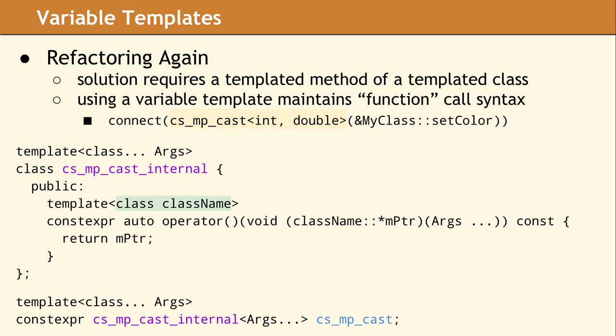In our current design, the work is now done by a templated method of a templated class. By moving the variadic template to the class, the argument types for setColor are still part of the parameter pack. The class name template was never passed in the old design. It was deduced. This is why we can use a function object in the new design.